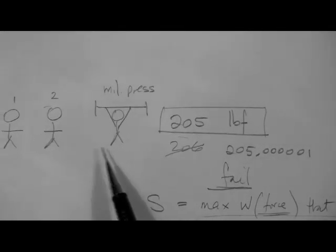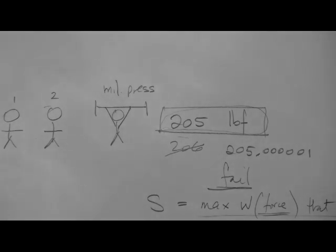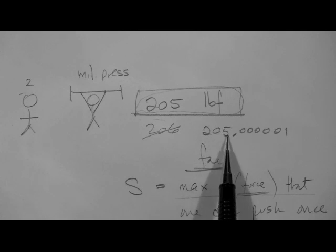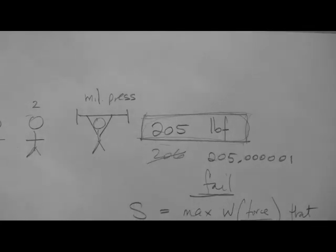So for number two, this force is the force at failure, meaning that if this person wants to push just a little more, they cannot do it. This is the maximum force they can push with. That is the force at failure.